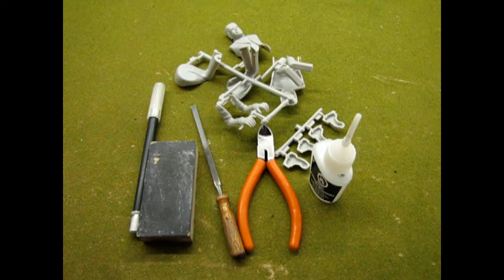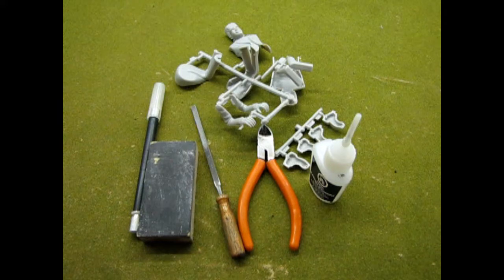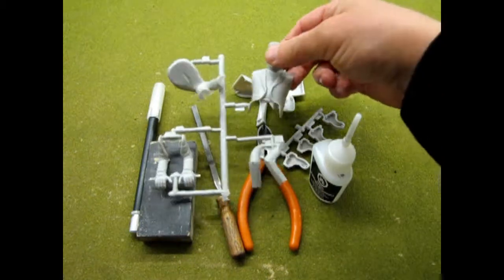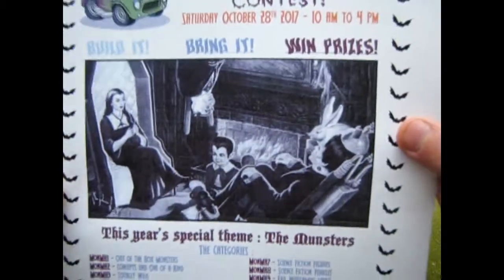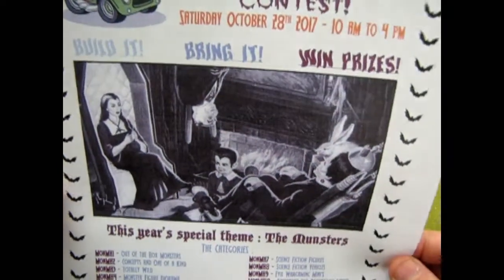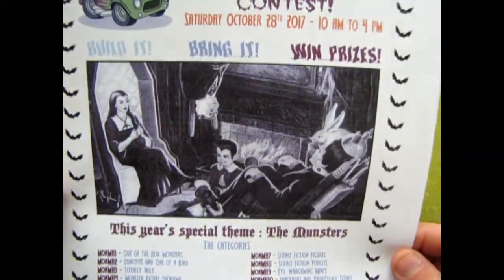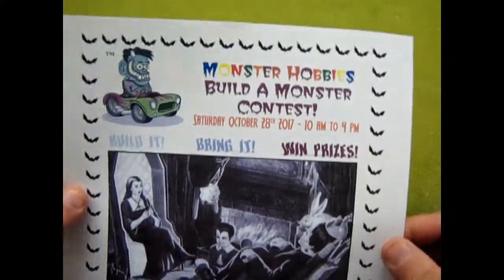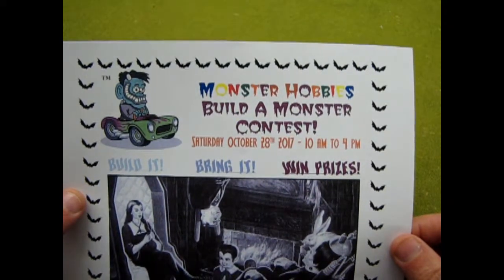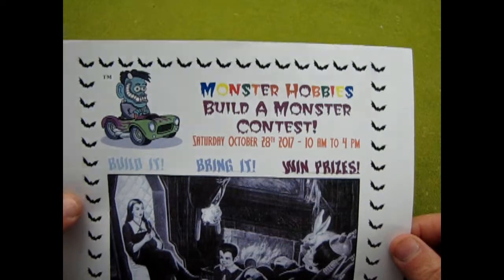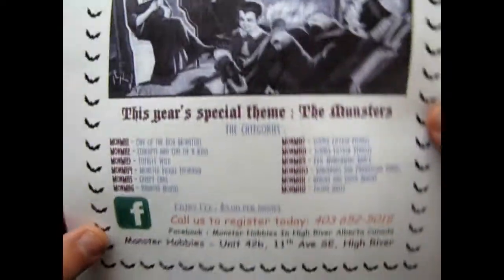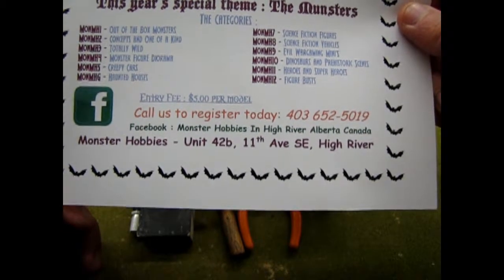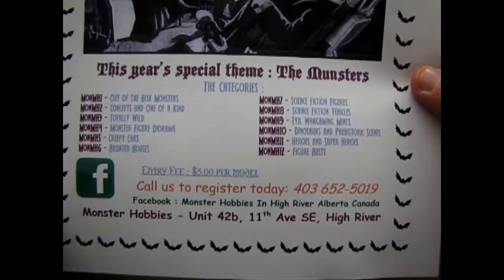Hello everybody, welcome to a quick build section at Monster Hobbies. Today we're looking at this Herman Munster kit - actually he's part of a kit, the original Monsters Living Room set by Aurora Polar Lights and Round 2's version. You can get this in glow-in-the-dark. We'll be hosting our Monster Hobbies build a monster contest Saturday October 28th 2017, 10 a.m. to 4 p.m. You can enter in the store or online if you contact us on Facebook. It's five bucks entry per model in all of these categories here.